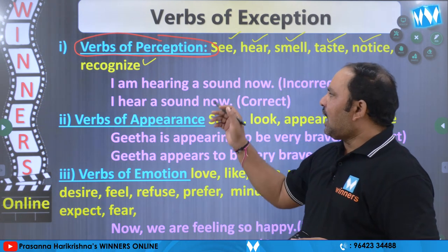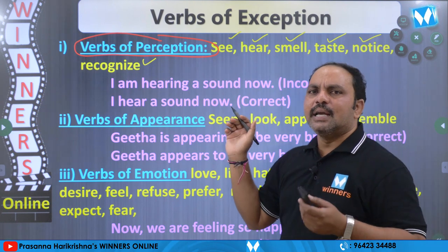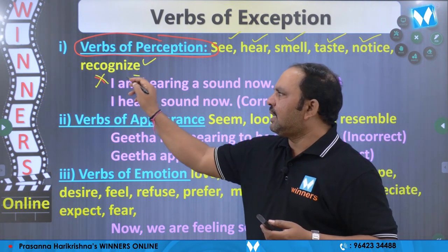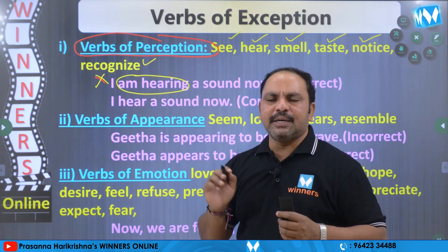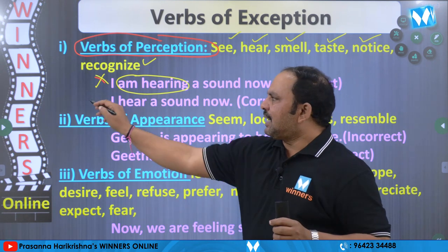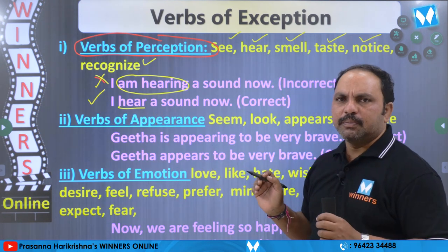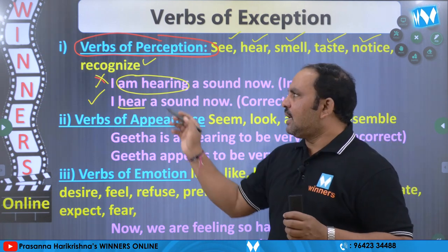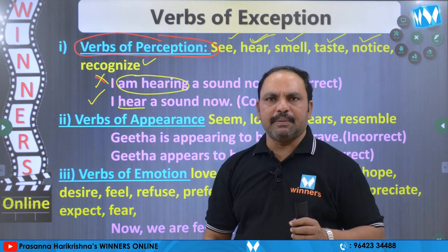Udaharana: 'I am hearing a sound now' — this is an incorrect sentence. Endukante 'hear' ane padaniki am hearing present continuous undadhu. Correct sentence enti: I hear a sound now. Endukante 'hear' ane idi vaadaaki present continuous undadhu kawatti.